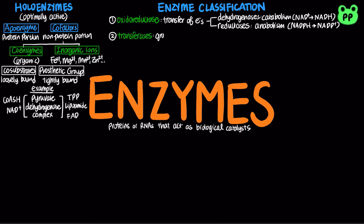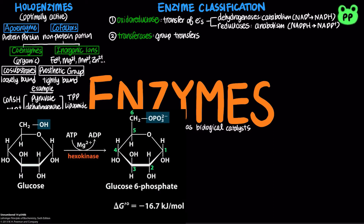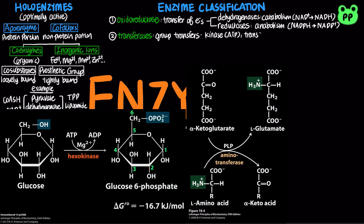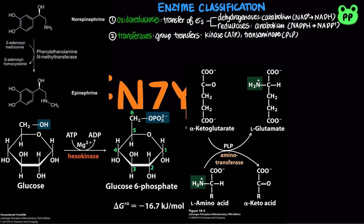Transferases catalyze group transfers between molecules, including kinases that transfer phosphate group from ATP to substrate, transaminases that transfer amine from one molecule to another, which requires the coenzyme pyridoxal phosphate or PLP, and methyltransferases that transfer methyl group from S-adenosylmethionine or SAM to substrate.